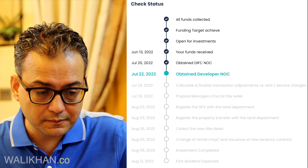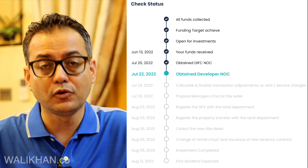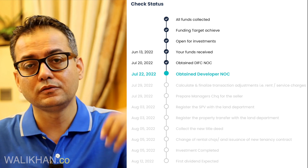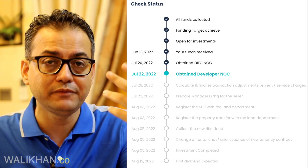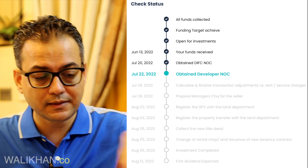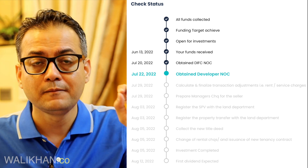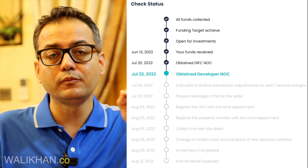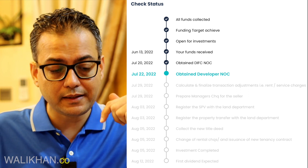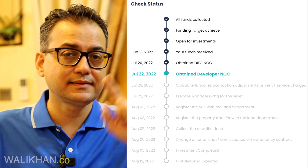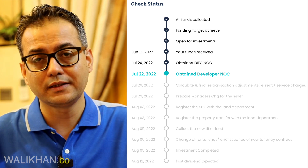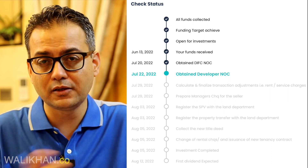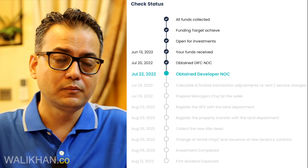Since a tenant is already present, the existing checks will be converted to the new company name — i.e., the SPV. The total time expected for this entire process is until August 5th, and the first dividend is expected on August 12th. We invested on June 13th, so the first dividend comes on August 12th. There was a 20-day delay because the property owner was outside UAE; otherwise, the process normally takes one to two months.